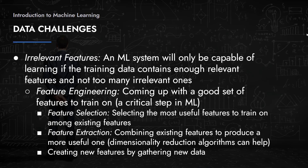Another problem is irrelevant features. An ML system will only be capable of learning if the training data contains enough relevant features and not too many irrelevant features. There's something called feature engineering which is crucial to master to be a proper data scientist or machine learning engineer — coming up with a good set of features to train on. You might be given data that has a lot of features, but not all of it may be directly correlated with the outcome variable.